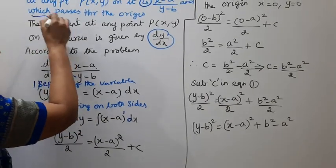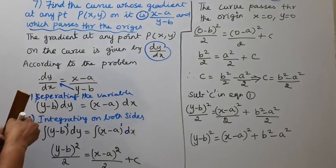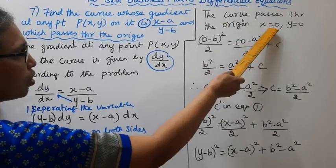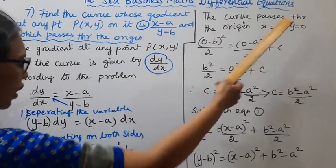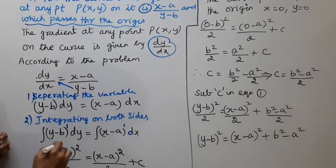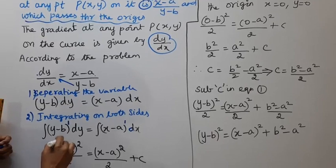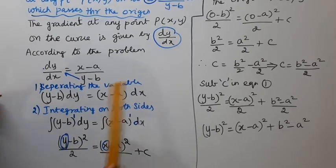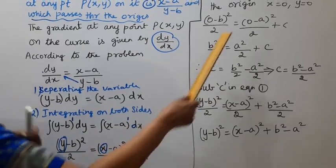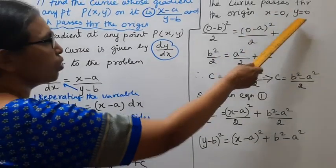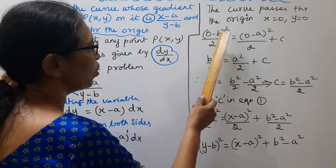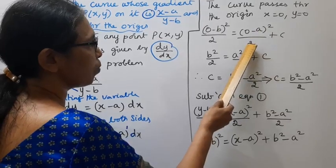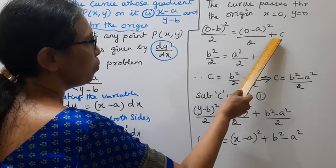Now, the curve passes through the origin. The curve passes through the origin, so x equal to 0 and y equal to 0.